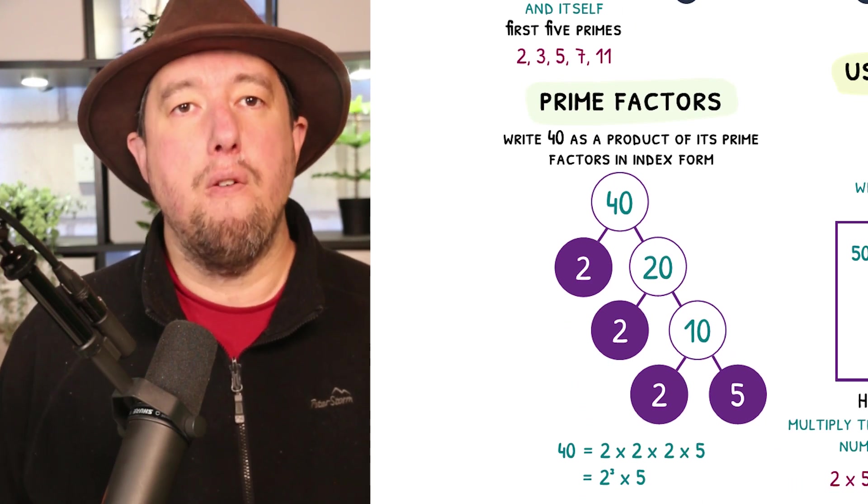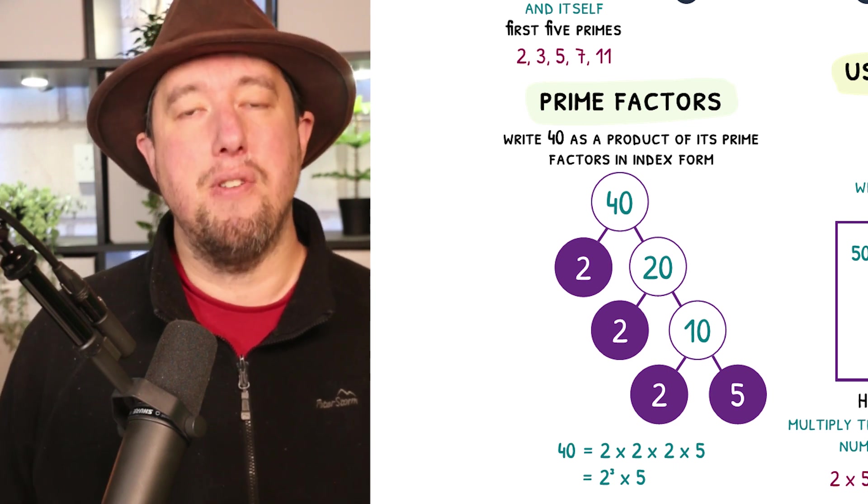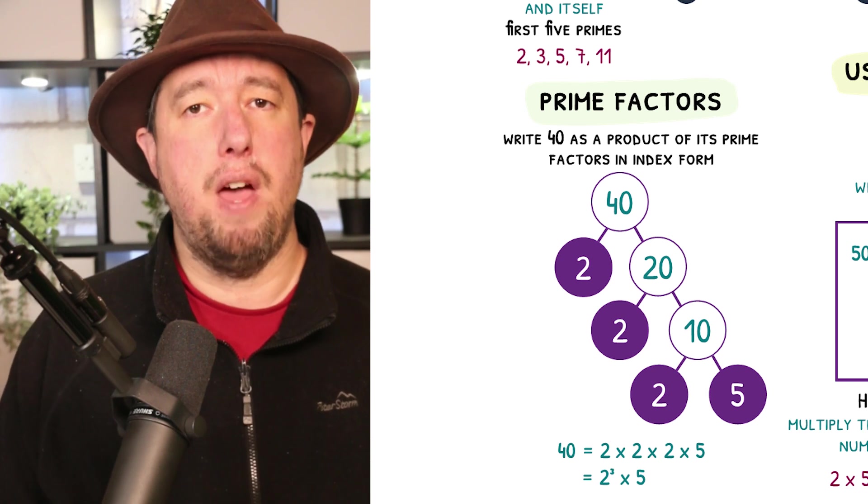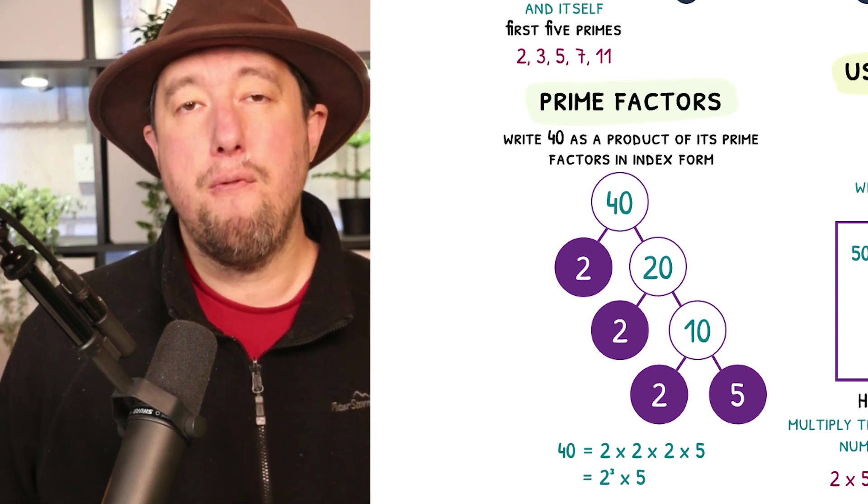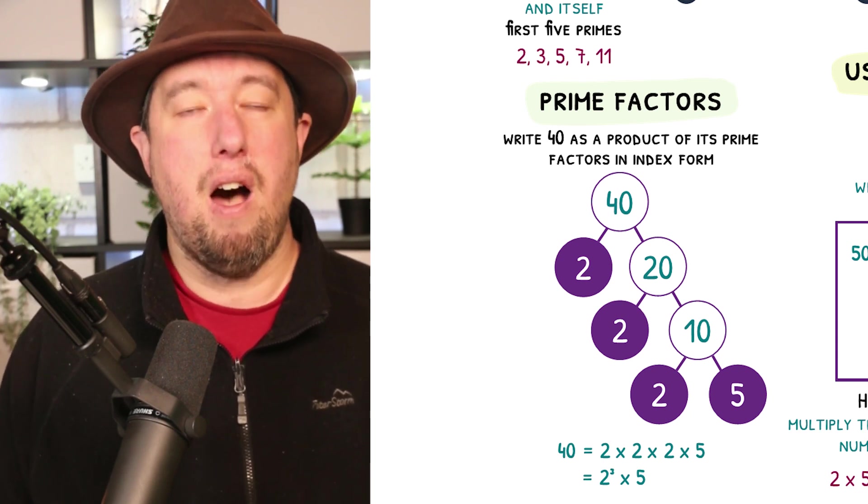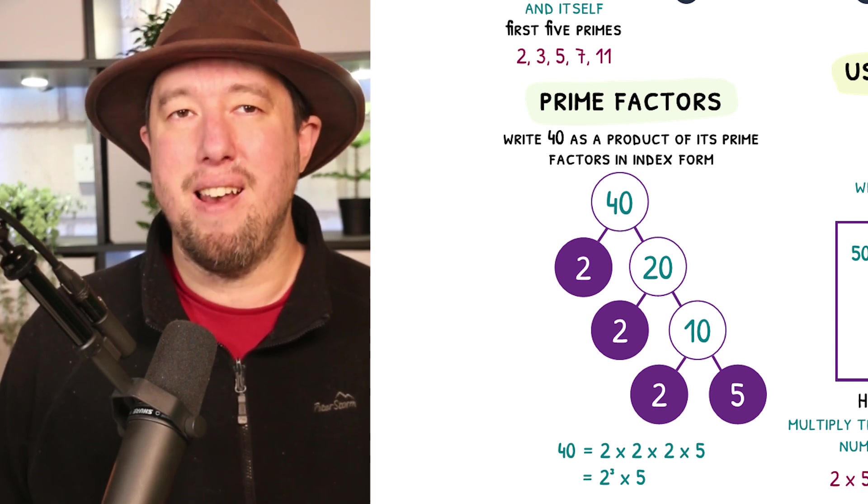We know primes and we know factors, so why not smash them together to make prime factors? All numbers can be written as a product of their prime factors. To find the prime factors of a number, there are a number of different methods, but each are effectively doing the same thing. I like the bubble approach, but if you like straight lines, there are better methods out there for you.